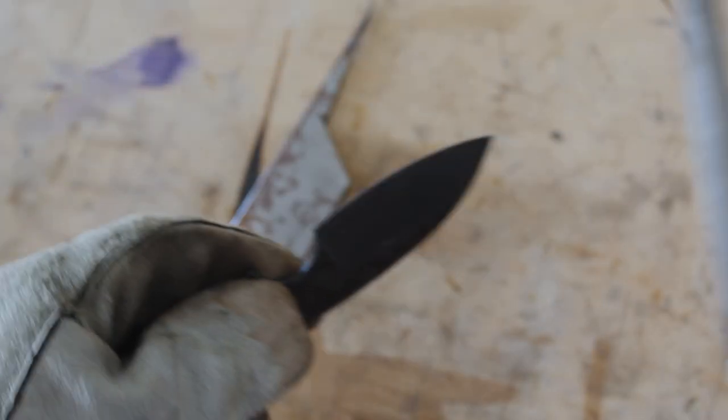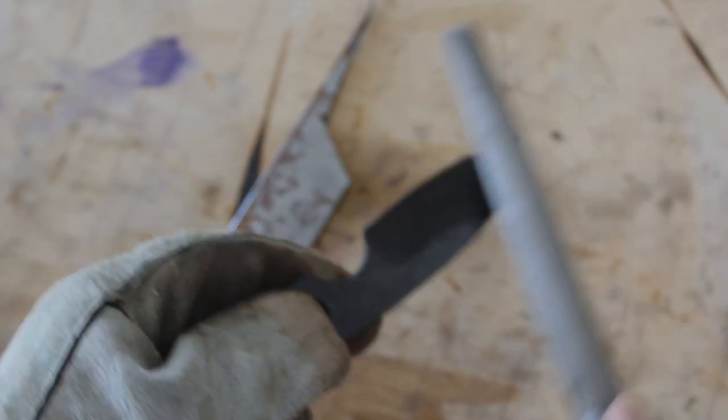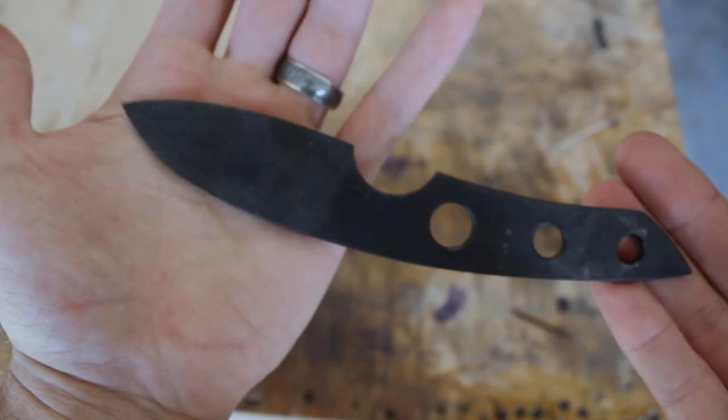Now I'll check the knife with a file to ensure that the steel hardened. After that I will put it in the oven at 400 degrees for two cycles of two hours to temper the steel.